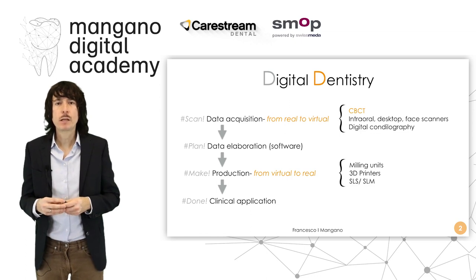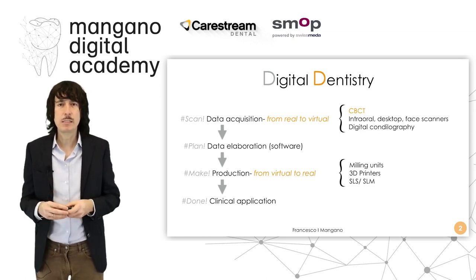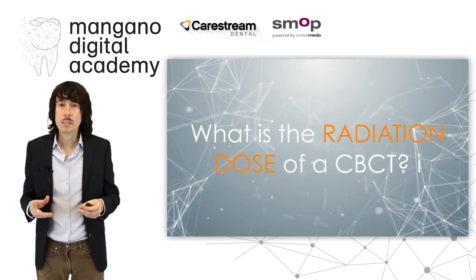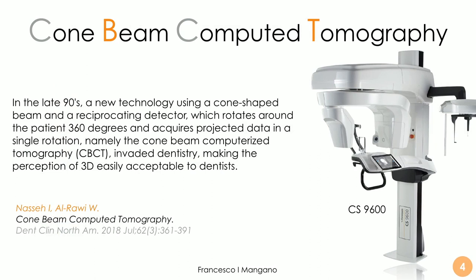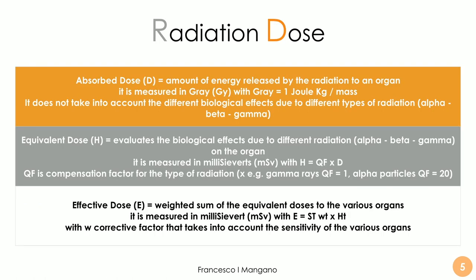In this first lecture I will talk about cone beam computed tomography. We will focus on the scan phase, and the question is: what is the radiation dose of a cone beam computed tomography? The cone beam computed tomography appeared in the late 90s as a new technology using a cone-shaped beam and a reciprocating detector which rotates around the patient 360 degrees in order to acquire projected data in a single rotation. It immediately invaded dentistry because it made the perception of 3D easily acceptable to all dentists, and today CBCT is found in dental offices around the world. Radiation dose is a very important topic when we talk about cone beam computed tomography.